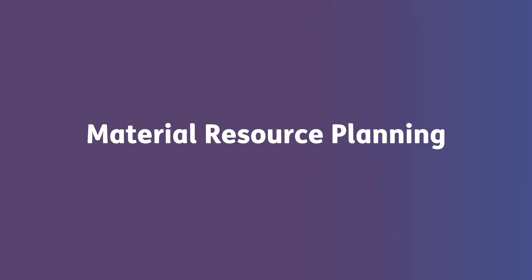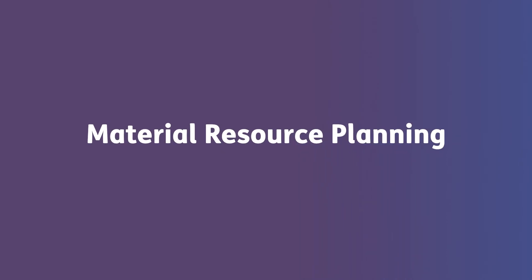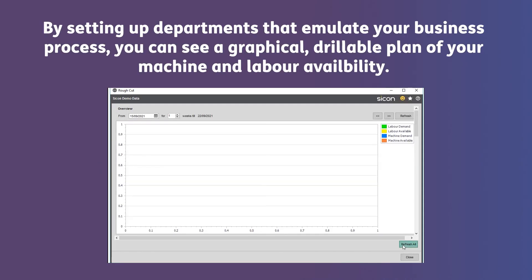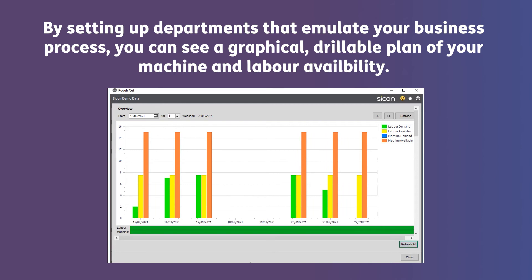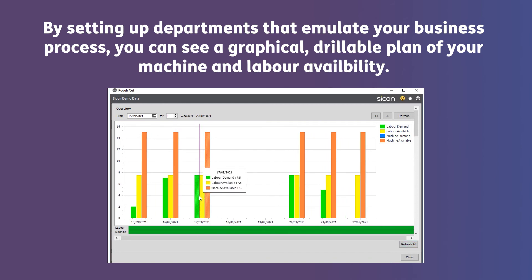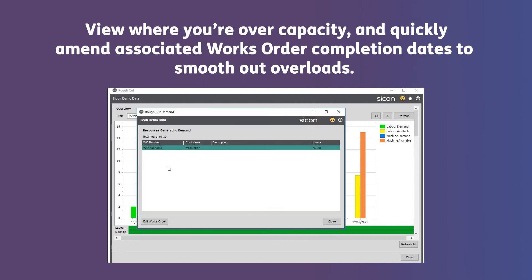Next we look at material resource planning's capacity planning wizard. By setting up departments that emulate your business process you can see a graphical, drillable plan of your machine and labour availability, view where you're over capacity and quickly amend associated works order completion dates to smooth out overloads.